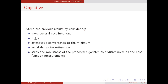The objective of this paper was to extend the previous results by considering more general functions — in particular, extending to the n-dimensional case, not limited to two dimensions — while guaranteeing asymptotic convergence to the minimum and avoiding derivative estimation schemes. Moreover, we also studied the robustness of the proposed algorithm to additive noise on the cost function measurement.